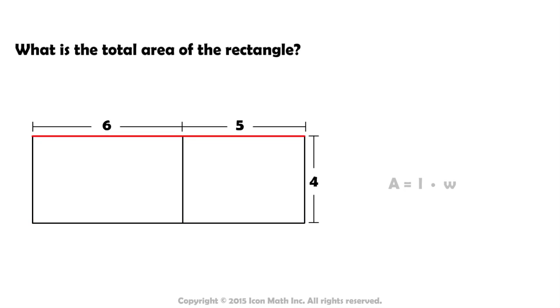First, we can find the total length of the rectangle: 6 plus 5 equals 11. And then substitute the length and width into the formula. A equals 11 times 4. The total area is 44 units squared.